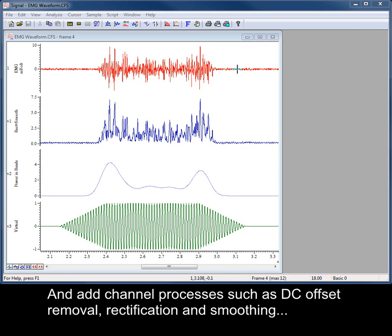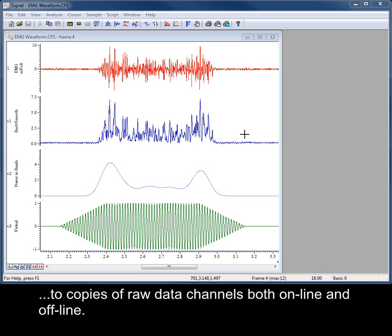And add channel processes such as DC offset removal, rectification and smoothing to copies of raw data channels both online and offline.